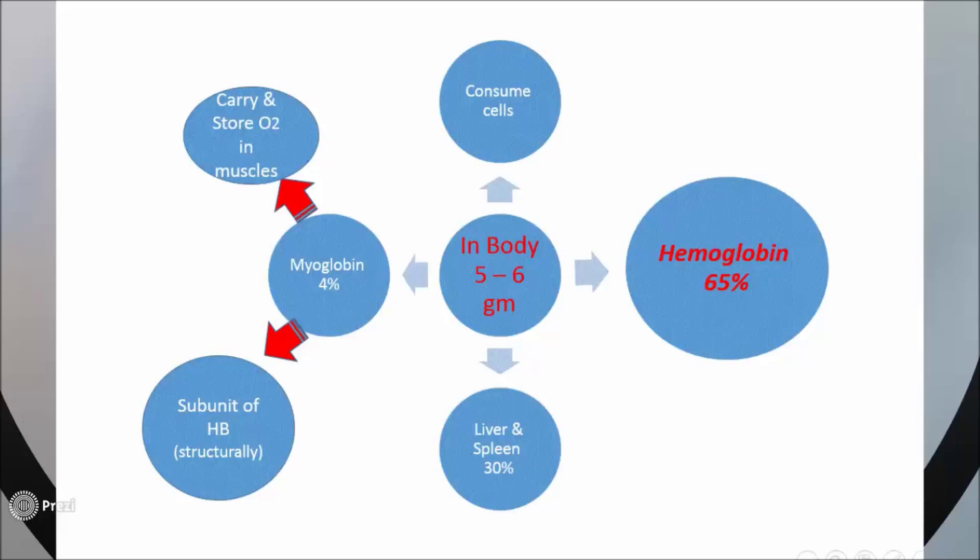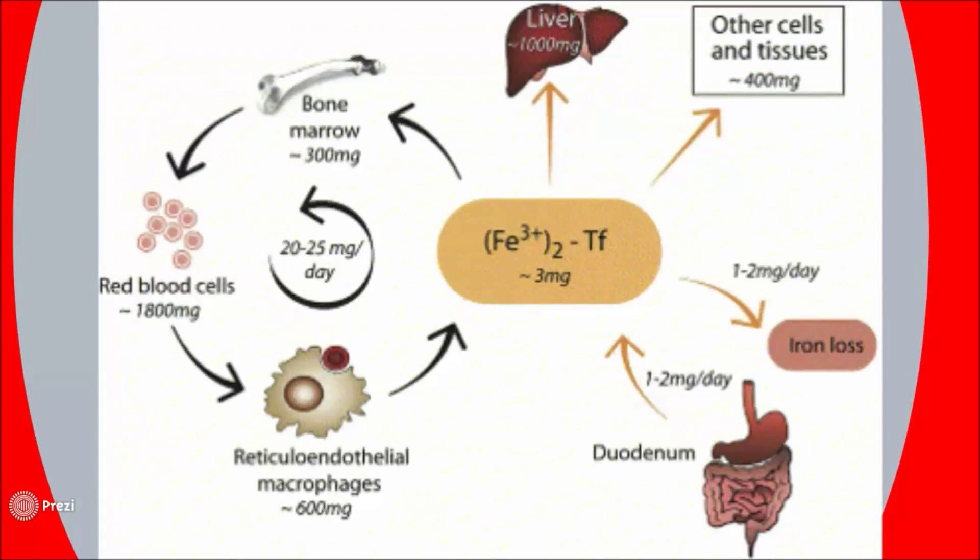Iron is present in the body in a very limited amount, only 5 to 6 milligrams, distributed as following: hemoglobin contains 65%, 30% is found in liver and spleen, 4% is found in myoglobin, and the rest is consumed by other cells. Those other cells consume only 400 milligrams of iron and include the intestine, liver, bone marrow, and reticuloendothelial system.